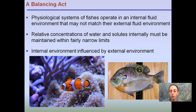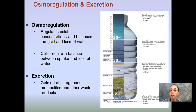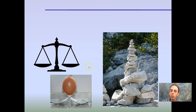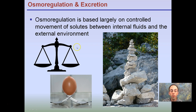This is a clownfish living in salt water, and this is a sunfish living in fresh water. We understand what stresses most of these fish are under. Osmoregulation is regulating solute concentrations and balancing the gain or loss of water. Cells require a balance between uptake and loss of water. Excretion is getting rid of nitrogen metabolites and other waste products. Osmoregulation is based largely on controlled movement of solutes between the internal fluids and the external environment — the fish is trying to maintain homeostasis while the external environment puts stresses on the cell.